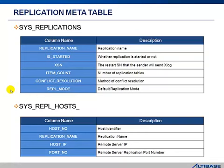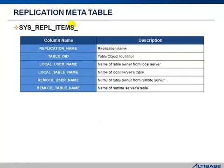For SYS_REPLICATION_HOST, you can check the IP information that the replication object is using. Multiple IPs can be assigned for each replication object. So the IP information that the local and remote are using is recorded. For SYS_REPLICATION_ITEM, this is the meta table that can check all table information included in the replication object — such as which table is saved in which replication on local and which table is saved on a remote server.